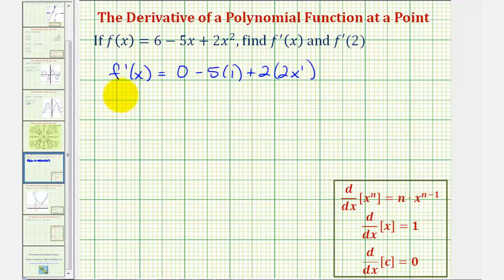Let's go ahead and simplify. Our derivative function is equal to negative 5 plus 4x.